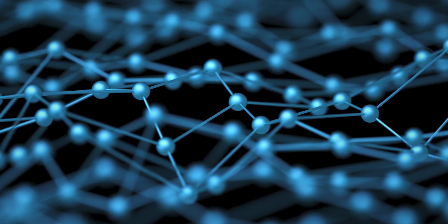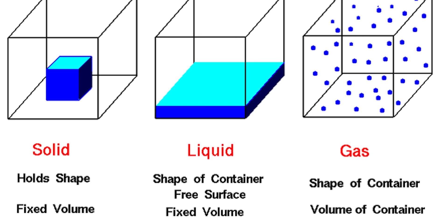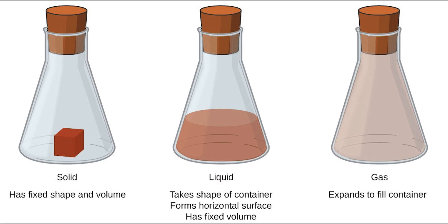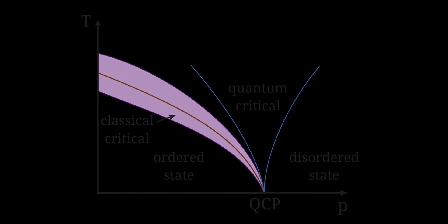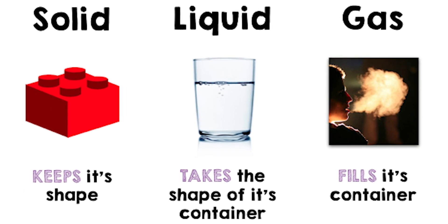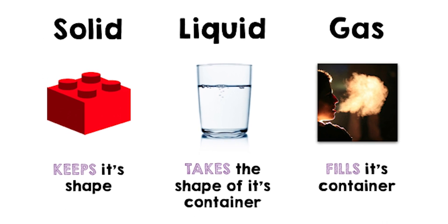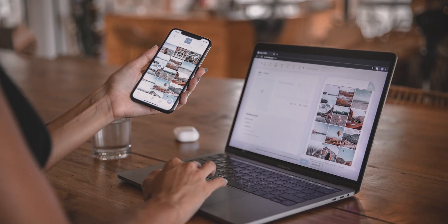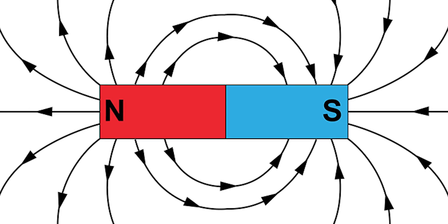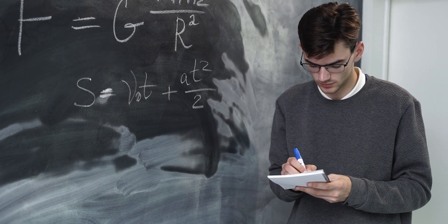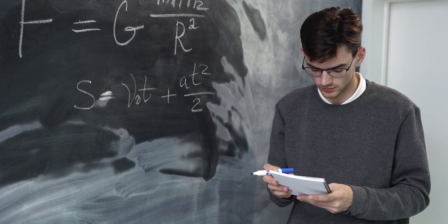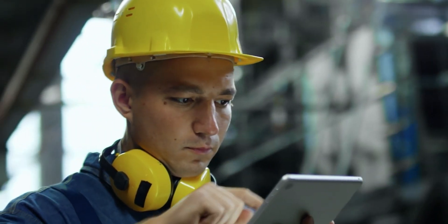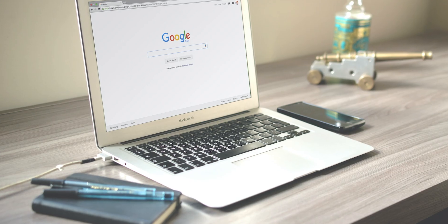Condensed matter refers to matter that is in a condensed state, meaning it has a definite volume and shape. This is in contrast to gaseous or plasma states, where the matter does not have a definite shape. In physics, condensed matter is studied under condensed matter physics, which is concerned with the physical properties and behavior of materials in the solid and liquid states. These materials can be composed of a single substance or a combination of different substances, and their properties can be influenced by factors such as temperature, pressure, and magnetic fields. The study of condensed matter physics is important because it helps us understand the properties of everyday materials including solids, liquids, and polymers, and it provides the foundation for many technologies including electronics, energy storage, and nanotechnology.